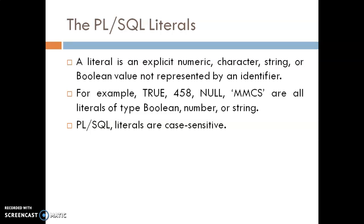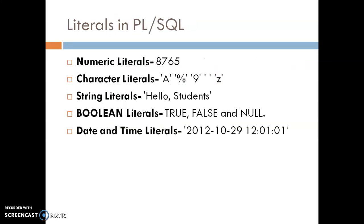PL/SQL supports five types of literals. First, numerical literals have numeric values — for example, 8765. Second, character literals are a single character in single quotation marks; any single character, numeric digit, or special symbol enclosed in single quotes is a character literal.